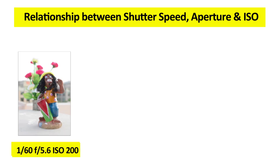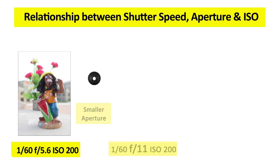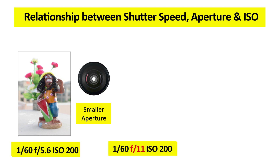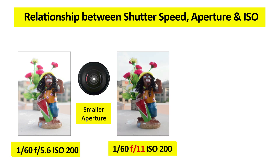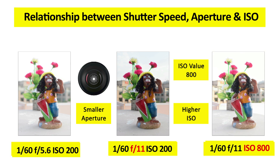Here is an image shot at 1/60th of a second with aperture f/5.6. In order to get more background in focus, we change the aperture — increasing the f-number to f/11 for a smaller aperture. Once we do that, the image tends to appear underexposed. To balance the exposure, we simply increase the ISO number to 800, so we get a well-exposed photograph without changing the shutter speed or aperture.